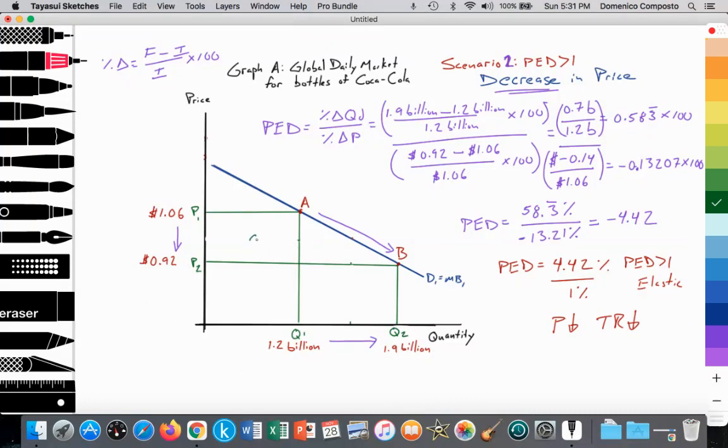So we can label these areas A, B, and C in our initial total revenue. Call that TR1. It's equal to P1 times Q1. P1 times Q1 is equal to areas A plus B. And that equals the price of $1.06 multiplied by 1.2 billion. And that equals $1.272 billion.